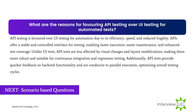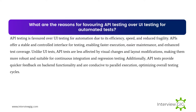What are the reasons for favoring API testing over UI testing for automated tests? API testing is favored over UI testing for automation due to its efficiency, speed, and reduced fragility. APIs offer a stable and controlled interface for testing, enabling faster execution, easier maintenance, and enhanced test coverage. Unlike UI tests, API tests are less affected by visual changes and layout modifications, making them more robust and suitable for continuous integration and regression testing. Additionally, API tests provide quicker feedback on backend functionality and are conducive to parallel execution, optimizing overall testing cycles.